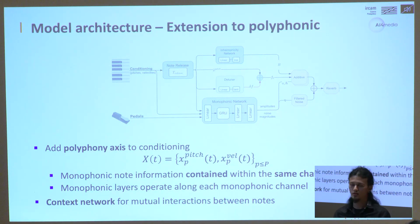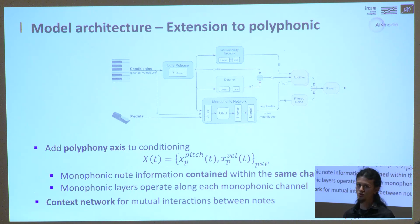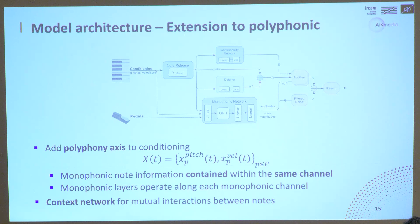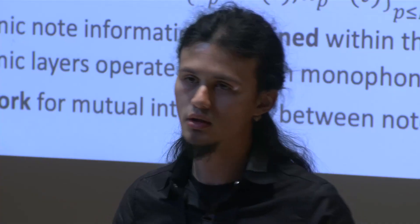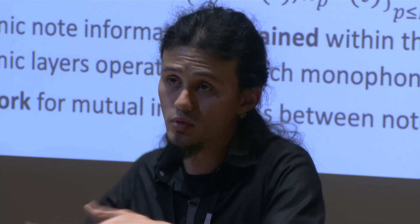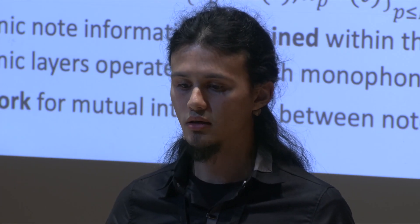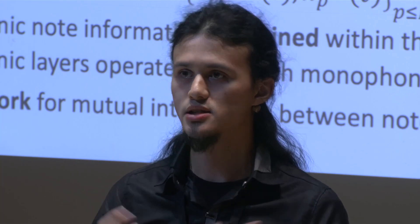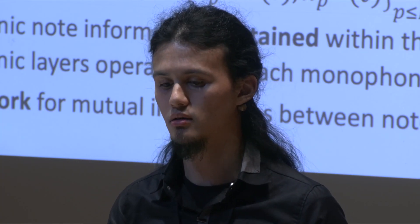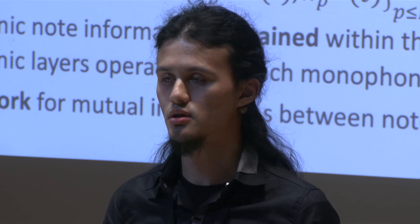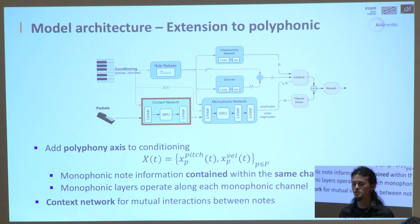To extend everything to the polyphonic case, we add a polyphonic axis to the conditioning vector — around each monophonic channel, we provide the monophonic information as presented before. All previous layers operate along each monophonic channel, so we learn a monophonic strings model applied on all notes. For global coherence, we add a module to compute a context vector shared by all monophonic channels, potentially reproducing interactions between notes such as sympathetic resonances.